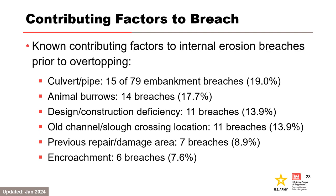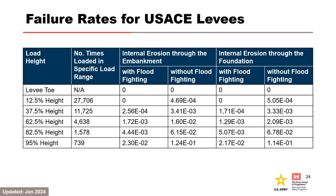Known contributing factors to internal erosion breaches prior to overtopping are listed. About 37% of the breaches involve culverts, pipes, or animal burrows, which could lead to concentrated leak erosion. Old channel or slough crossings, where the foundation is more susceptible to backward erosion piping, were also a significant percentage of the breaches. Based on the USACE levy data reviewed, failure rates were established for internal erosion through the embankment and through the foundation, with and without flood fighting, as a function of levy height. These rates are being incorporated into the levy screening tool (LST) and provide some degree of ground truth after a team has estimated the system response curve.